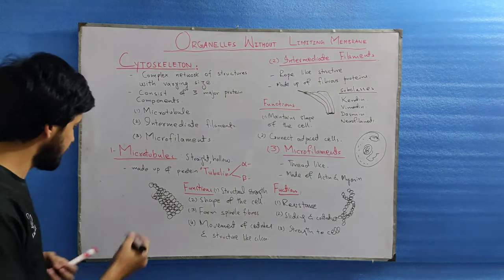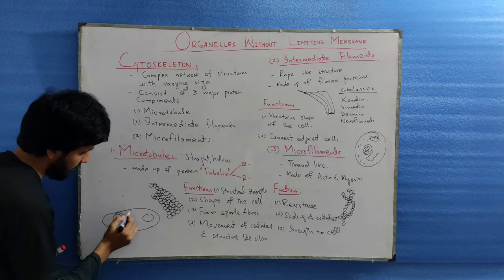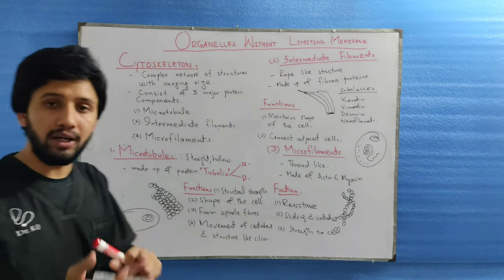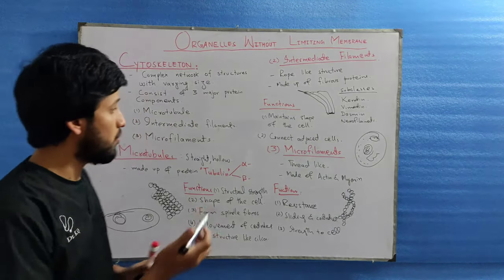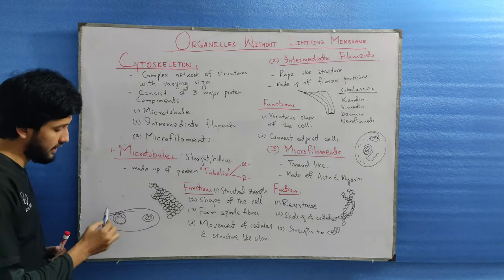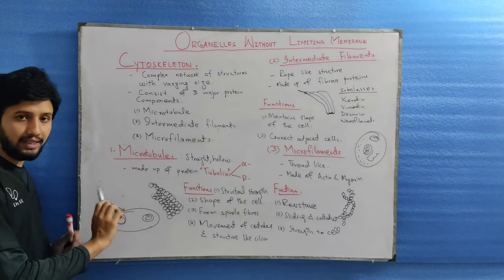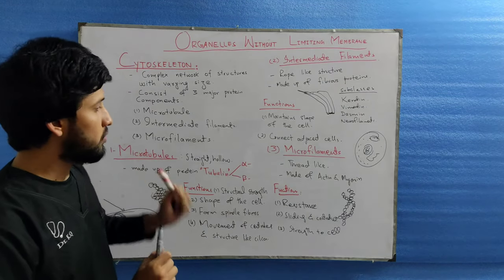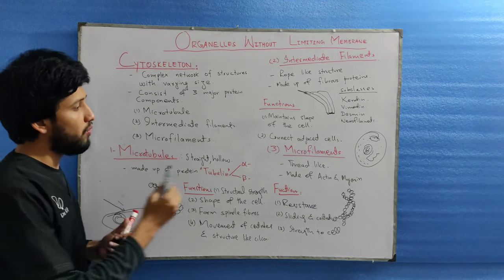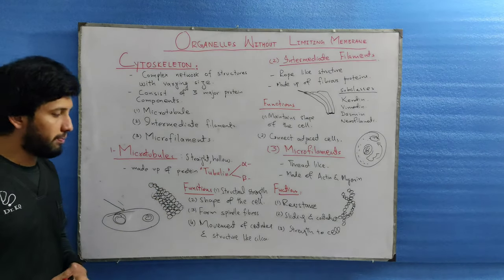Microtubules are like a conveyor belt — the belt rotating around rods. Whenever organelles like mitochondria or other vesicles want to move within the cell, they move through this microtubule which acts like a conveyor belt. This belt is continuously moving, helping mitochondria or other vesicles move to different parts of the cell.